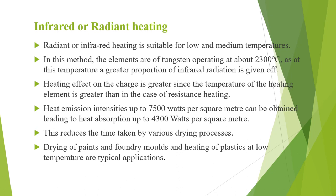Infrared or radiant heating: in resistance ovens the heat is transferred from the heating elements to the charge partly by radiation and partly by convection, the latter predominating at low and medium temperatures. In infrared or radiant heating, the heating elements are made of tungsten and operate at about 2300 degrees Celsius, at which a greater proportion of infrared radiation is given off. The heat emission intensity of up to 7500 watts per square meter is obtained, leading to heat absorption of up to 4300 watts per square meter, reducing the time taken by drying processes. Applications are drying of paints, boundary moulds and heating of plastics at low temperature.